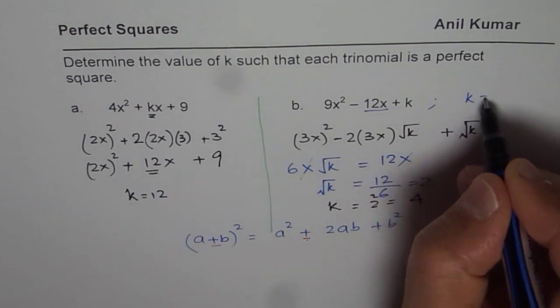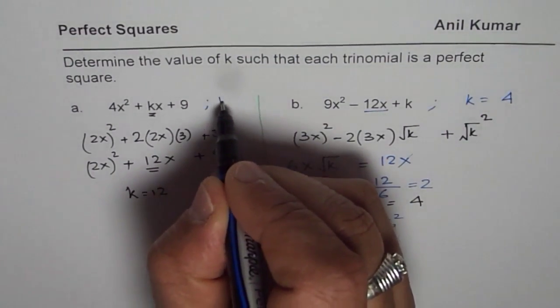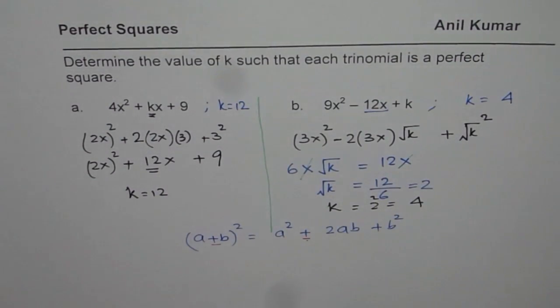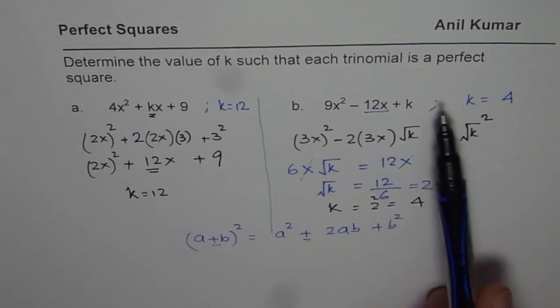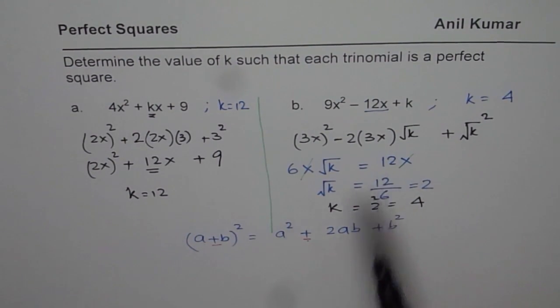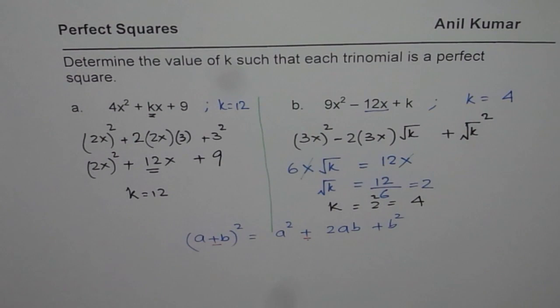So we have the solutions for both now. Here the k value is equal to 4, and in this case, k is equal to 12. I hope that you understand the strategy. So remember, we need to do square root of this, write it as a square, and then follow the technique. I hope that helps. Thank you, and all the best.